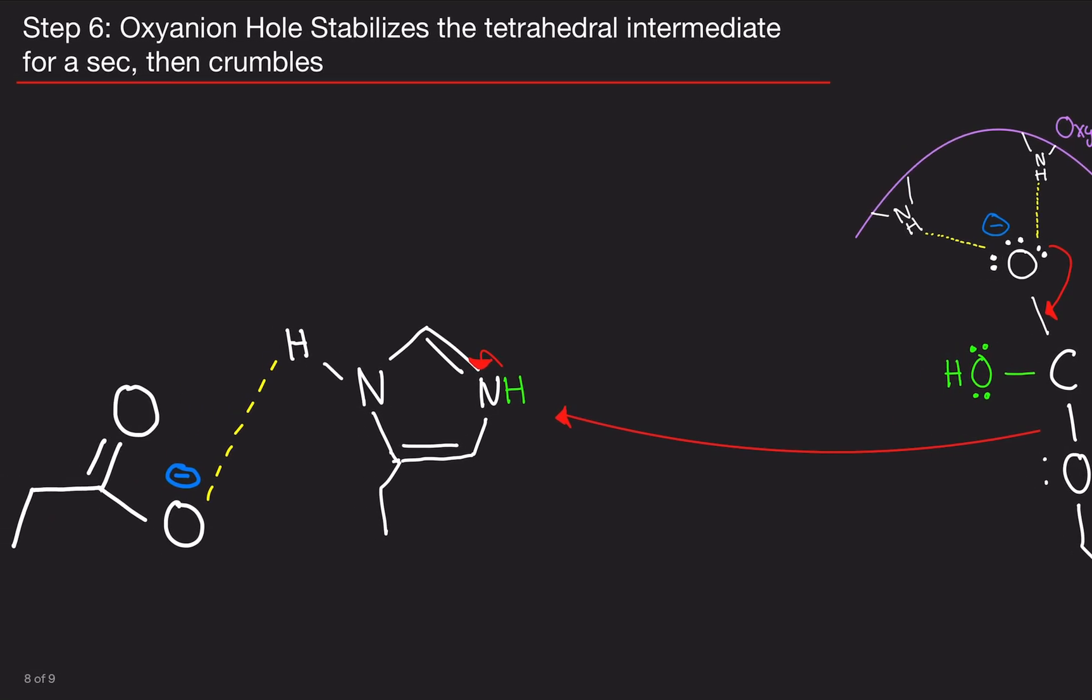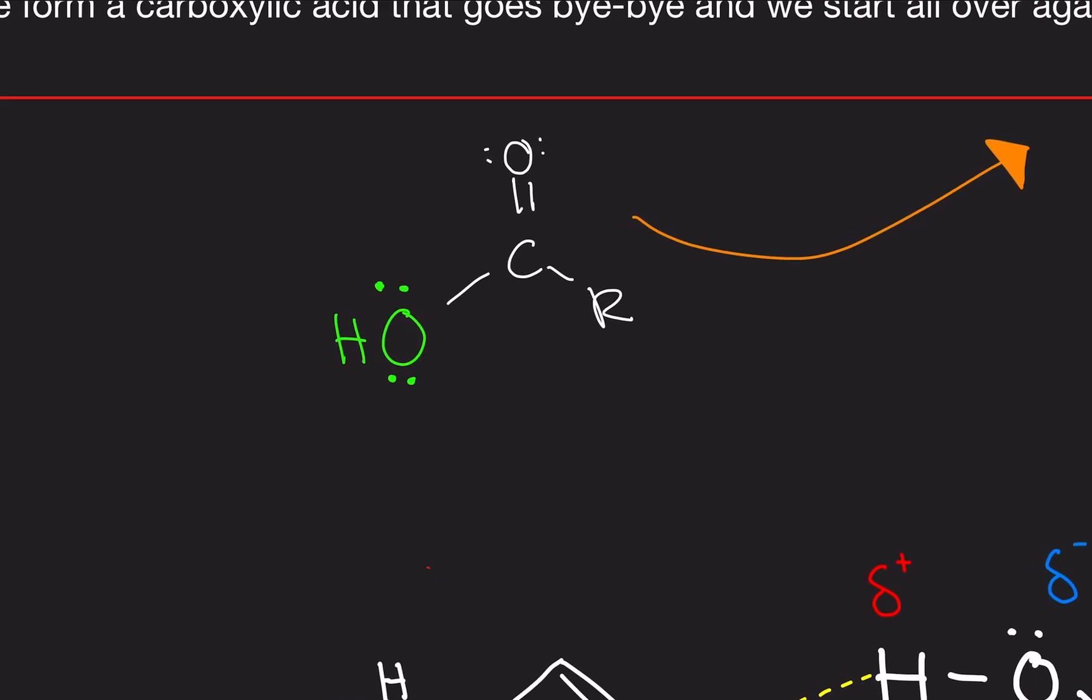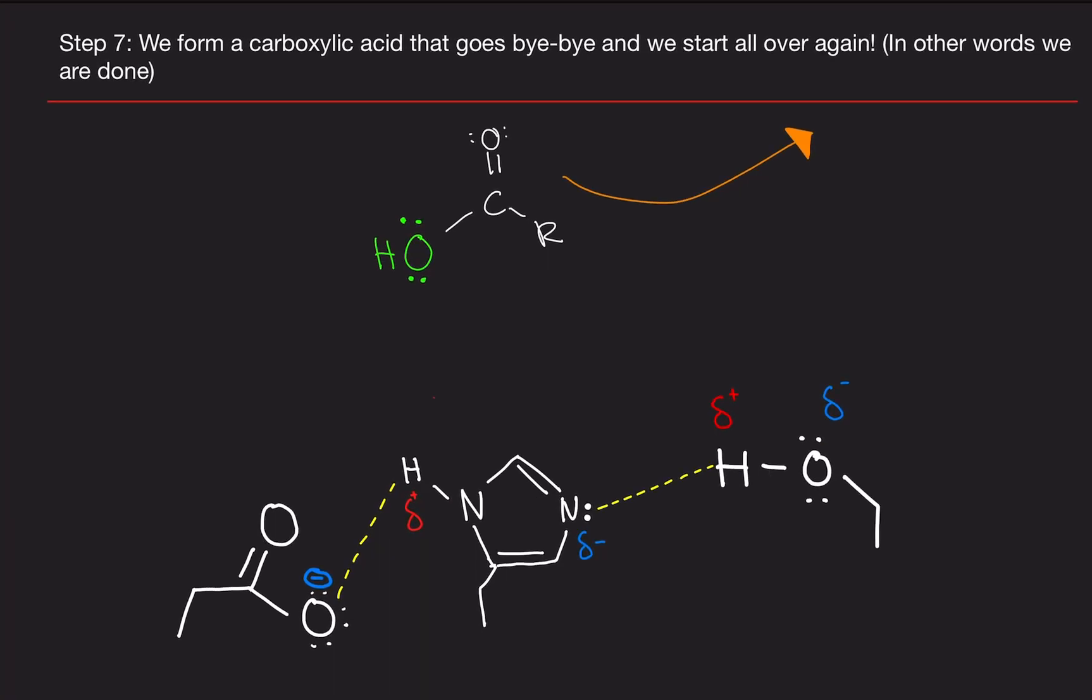Now, when that happens, we create a carboxylic acid. So when the serine molecule or alkoxide left, we left with the carboxyl group. And this carboxyl group is going to go leave. It's going to leave the molecule. We're done with it, it floats away.